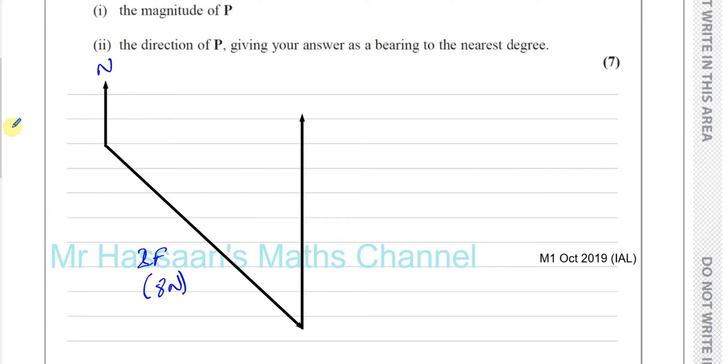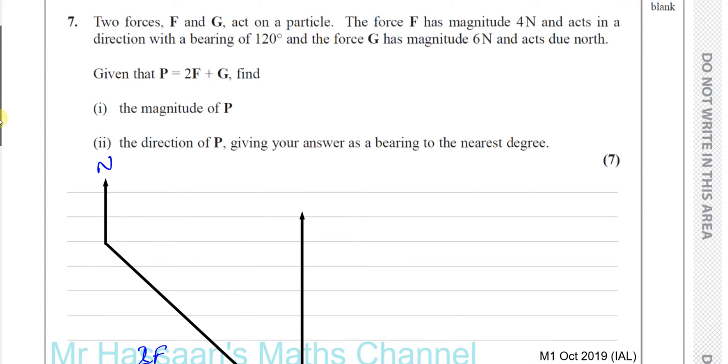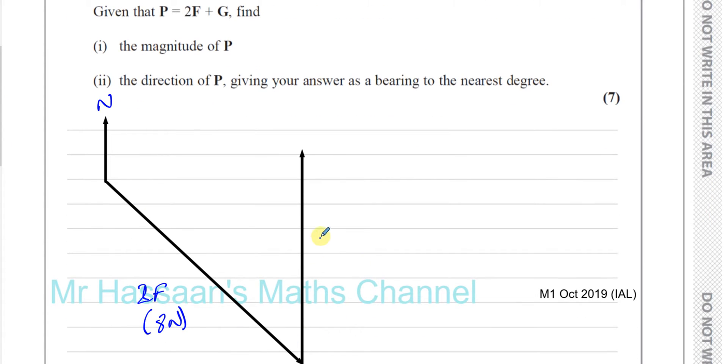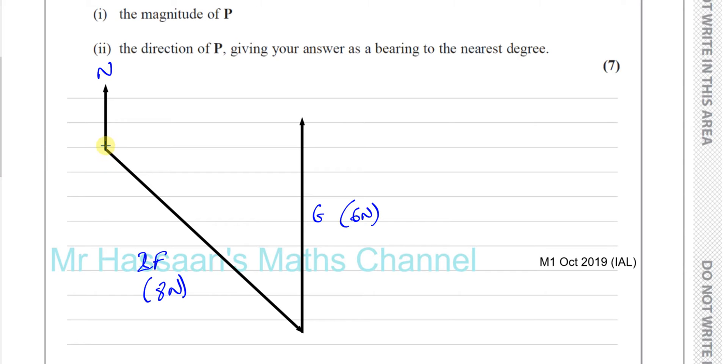And its magnitude will be 6 Newtons. Okay, so that's, was it G? That's the vector G, yes. 2F plus G, which is 6 Newtons long. Okay, and the resultant force will be the force P, which is the resultant. To draw the resultant, you start from where you began and you end where you ended. Basically, you just join them together. So, this is your resultant force, P. So, you have 2F and you have plus G equals P.